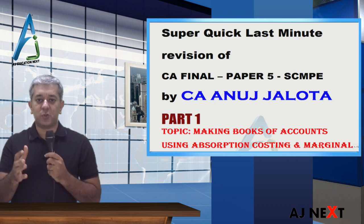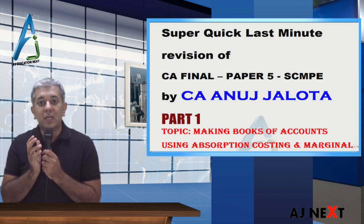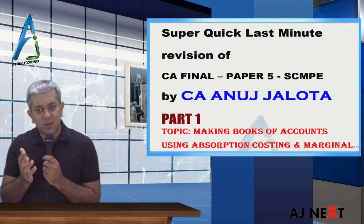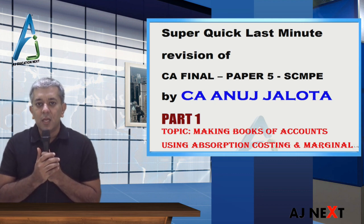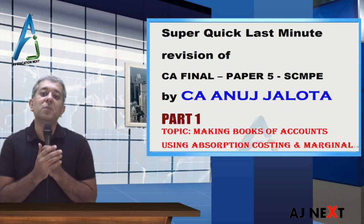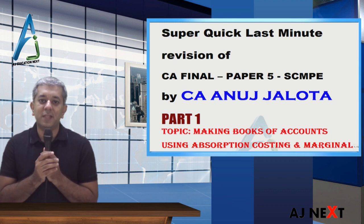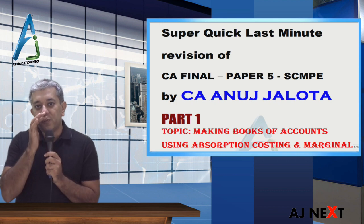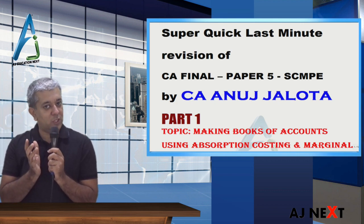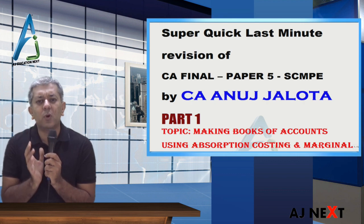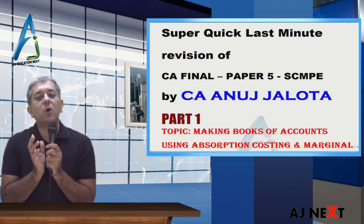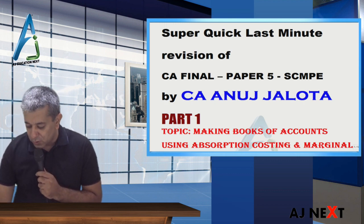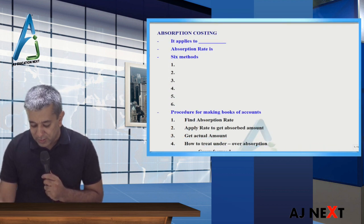Today our first part is one part on making books of accounts under absorption and marginal costing. That was our first chapter also, I think. Remember, your syllabus is not just making books of accounts. Your syllabus is basically how to do decision making. But before we came across that in chapter number two, our chapter number one was only about one small thing and that was how to make books of accounts under absorption costing and under marginal costing. Okay, so let's start with the revision.